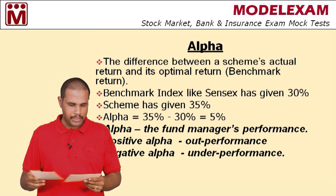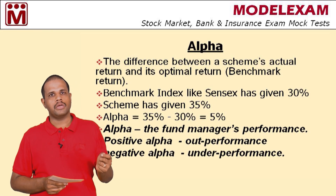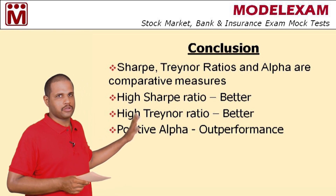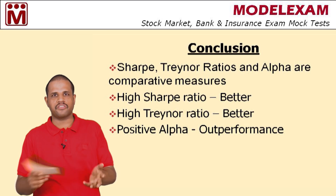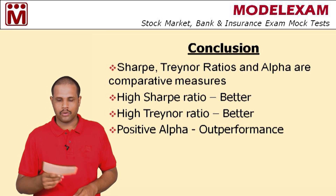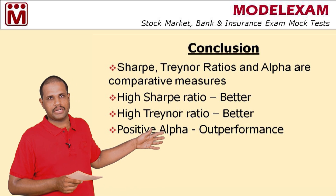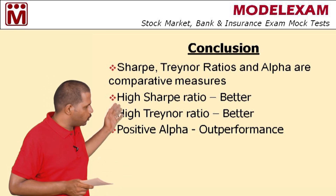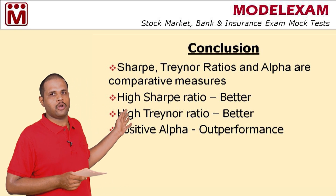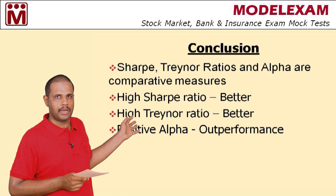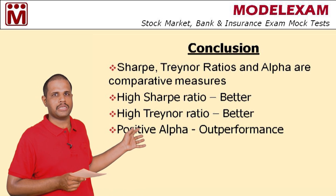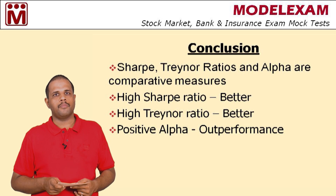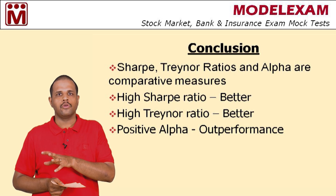To conclude: Sharpe ratio, Treynor ratio, and alpha are all comparative measures — they must be compared with some other scheme and should not be seen in isolation. Higher the Sharpe ratio, better the risk adjusted performance. Similarly, higher the Treynor ratio, better the risk adjusted performance. Positive alpha denotes outperformance and measures fund manager ability. We have heard that problems are being asked from Sharpe and Treynor ratios, so practice well.